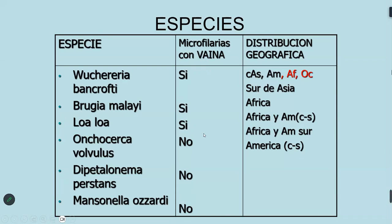Las microfilarias sin vaina incluyen Onchocerca volvulus, Dipetalonema perstans y Mansonella ozzardi. La vaina se observa fácilmente al microscopio. Las filarias adultas son vivíparas, no ponen huevos sino directamente larvas. Se cree que la vaina es una envoltura que contenía antiguamente al huevo, como la cáscara del huevo.